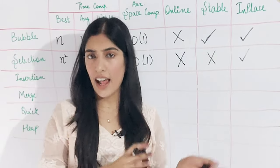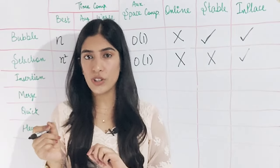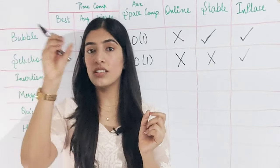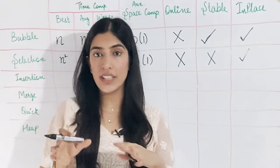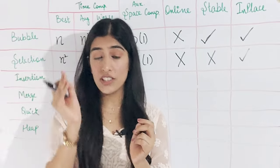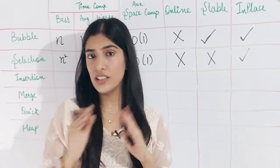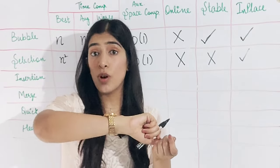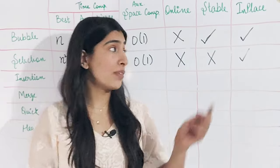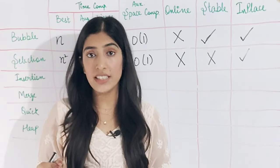If our requirement is that the algorithm should be stable, we can still use selection sort by making a small tweak: instead of swapping the minimum element directly, we can move it one by one like in insertion sort — shifting elements one by one. When we swap adjacent elements, the order does not get messed up. But if we are swapping with a completely random index, it will get messed up. So the algorithm is not stable, but we can make it stable with this small change.